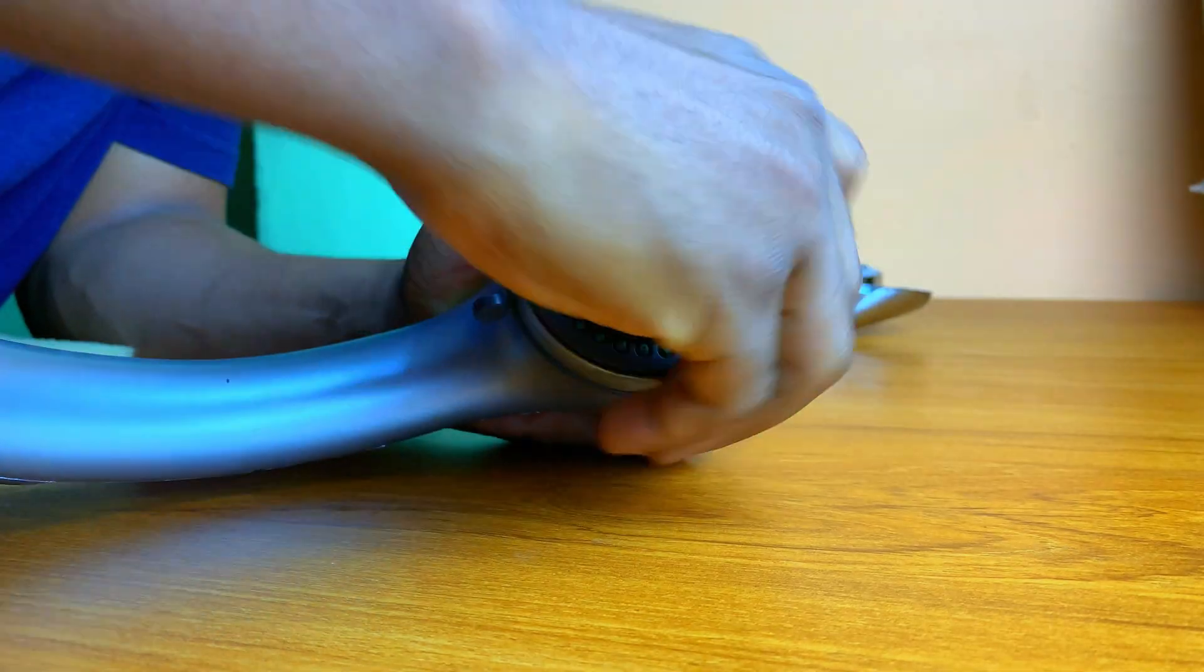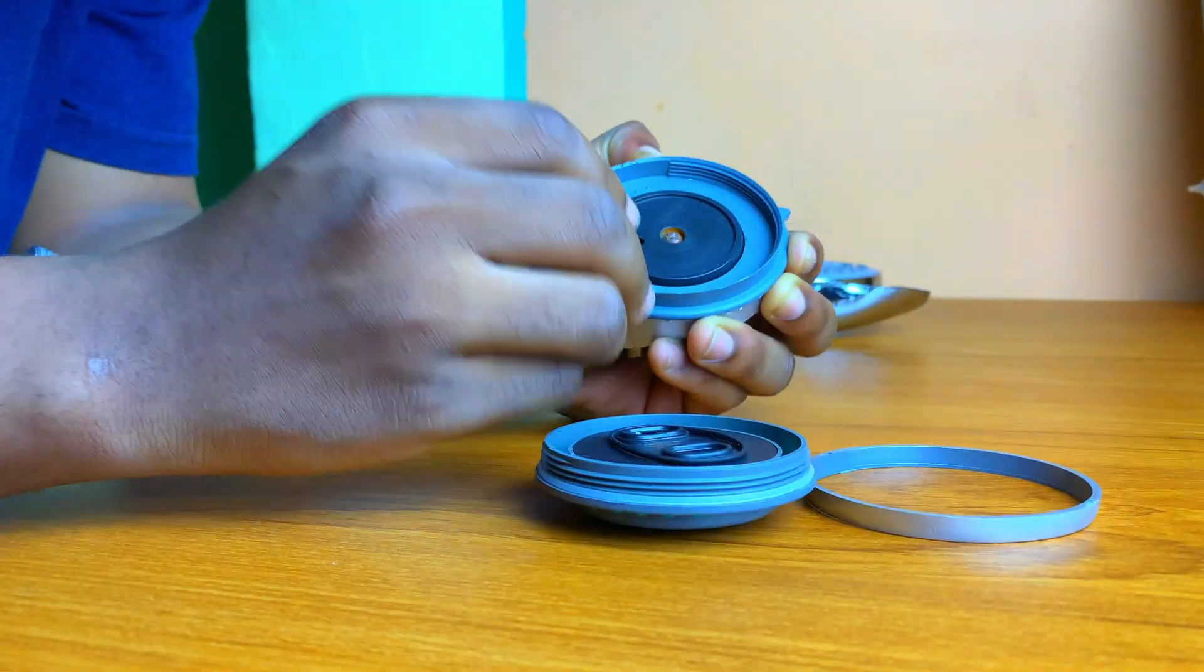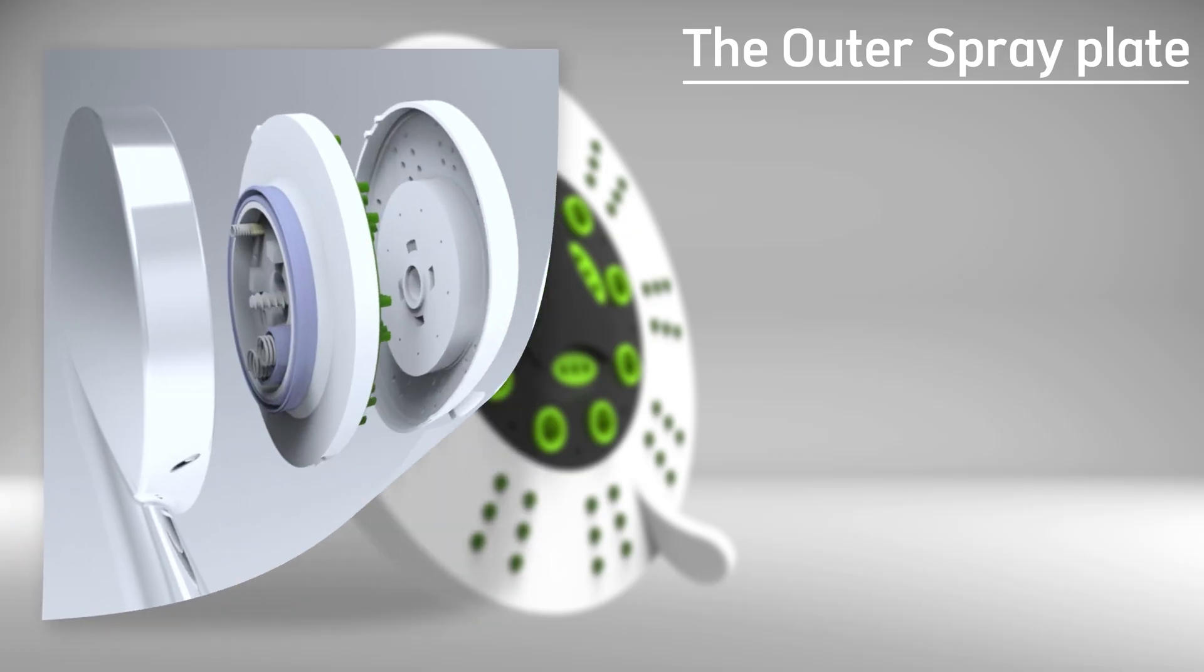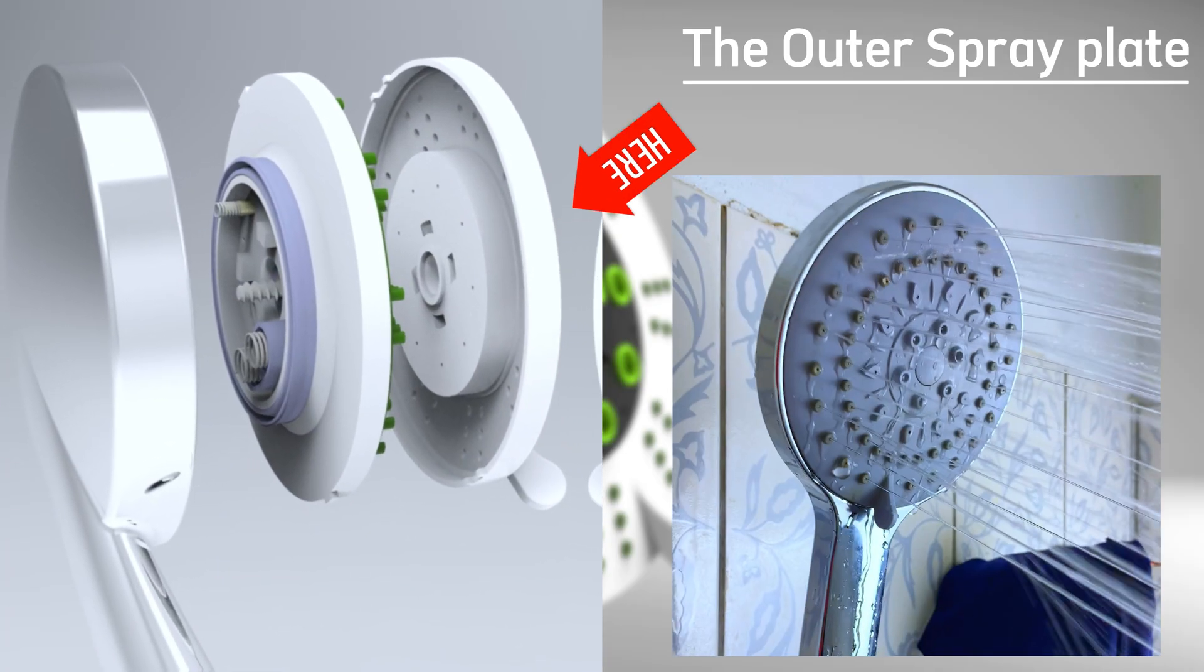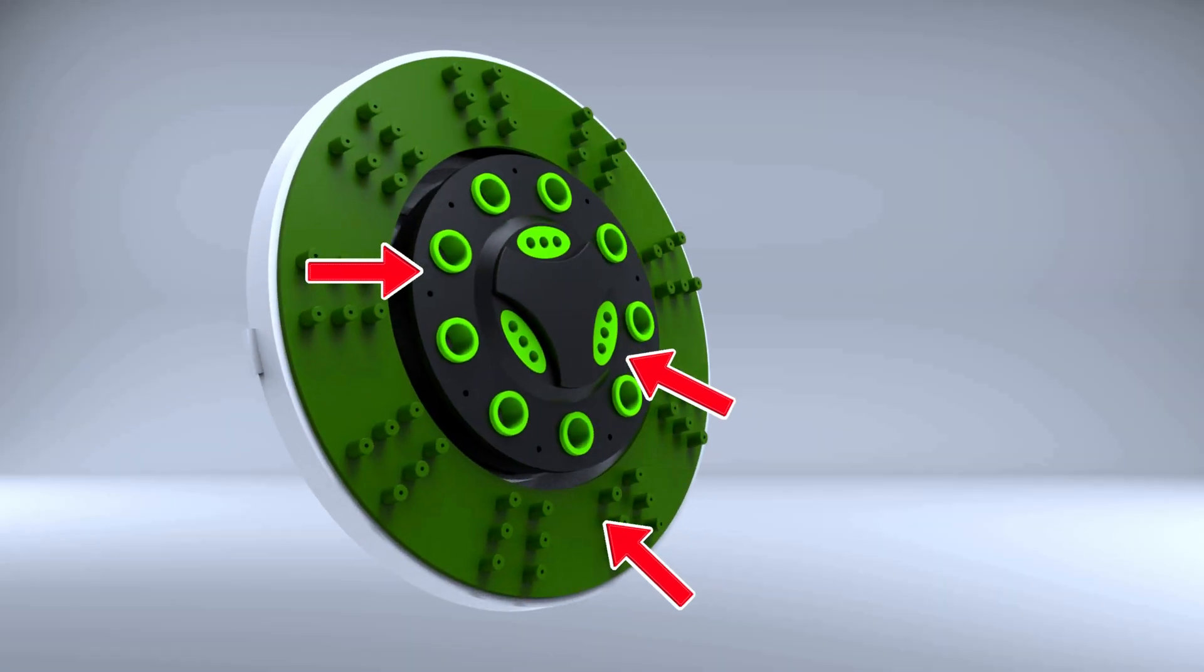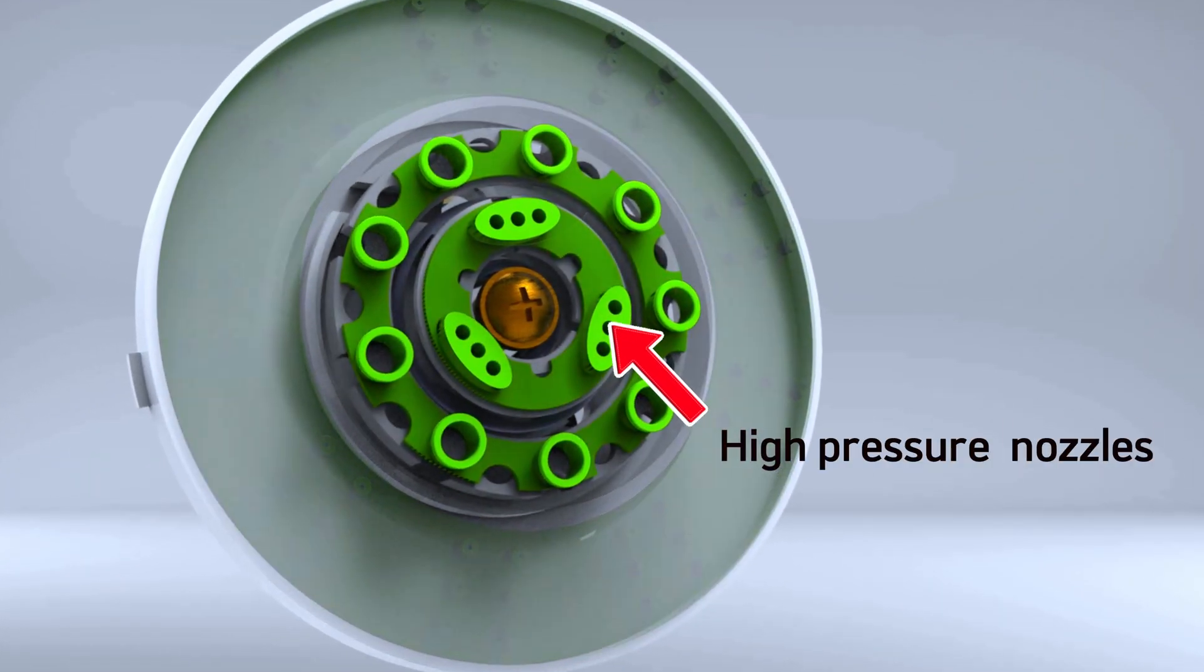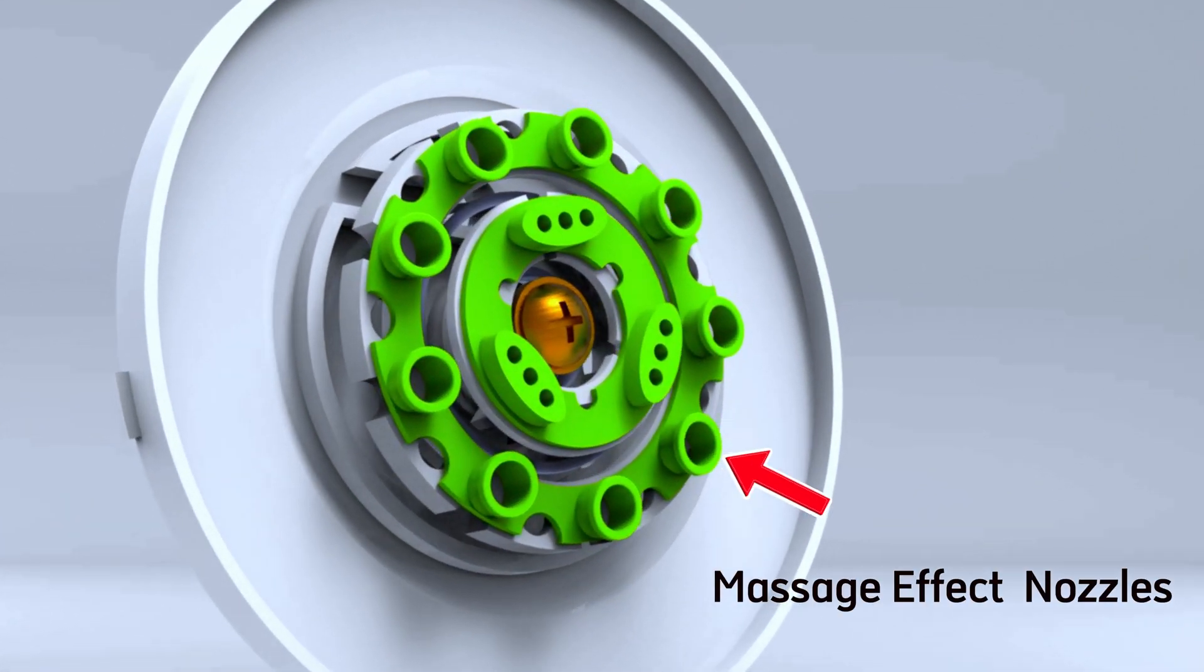Let's actually kick off this breakdown with the key components that make up a multifunctional shower head and their roles. Firstly, we have the outer spray plate. This is the visible front part of the shower head where water sprays out. It contains multiple small nozzles arranged in different zones for different spray effects. Some nozzles are meant for a wide spray, while others are meant for high pressure misting or massage effects.